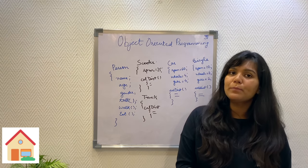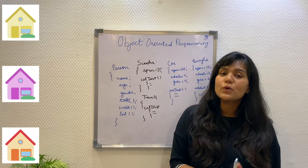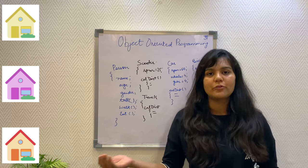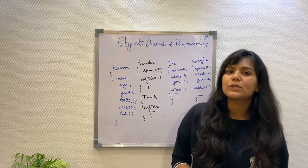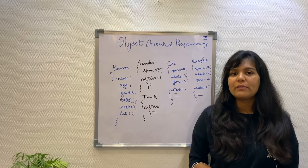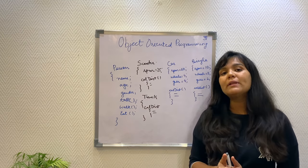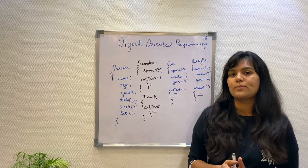Using the same blueprint, we can create any number of houses. Similarly, using the same class, we can create any number of objects. Now, going back to our original problem where we had to calculate the distance travelled for the vehicles, in object-oriented programming, we will think in terms of entities and objects.